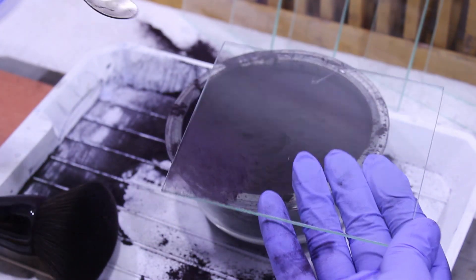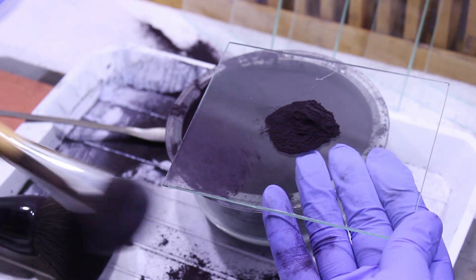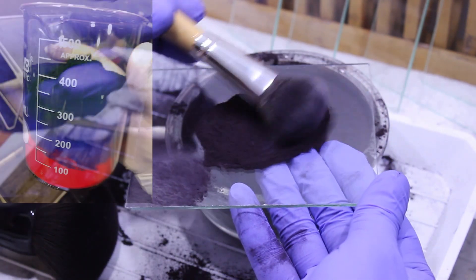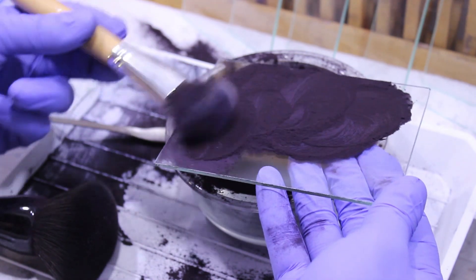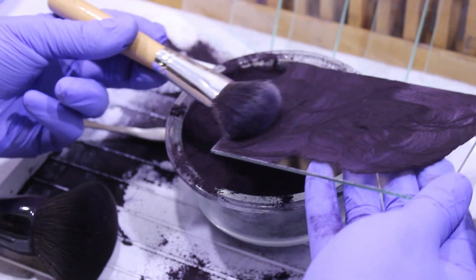After the first varnish has completely dried, which usually takes about an hour or so, we can dust on the starch. The dark looking stuff right here is a mix of orange, green, and violet starch grains. We just take a scoop of the stuff and spread it around with a soft makeup brush.